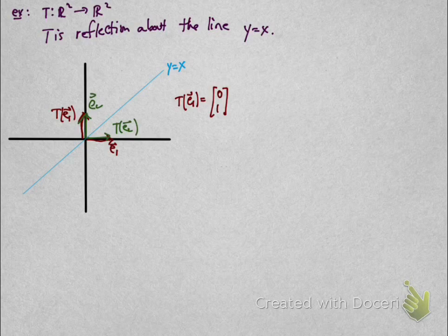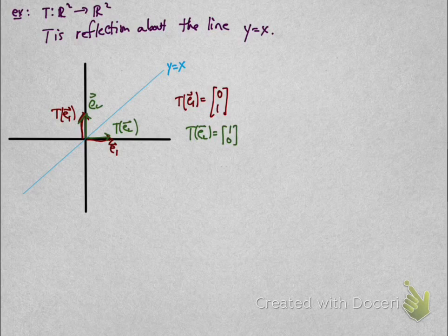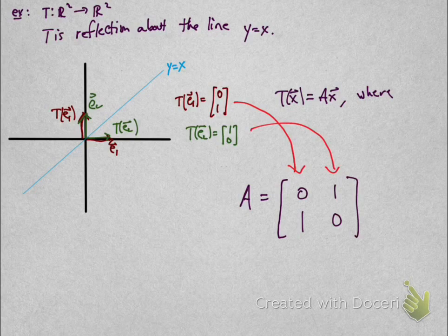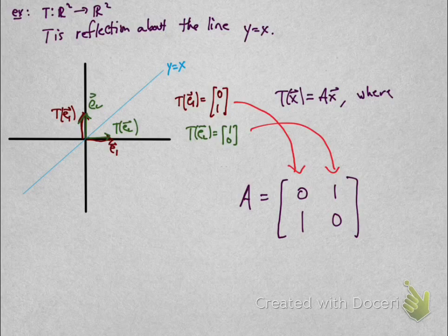E_2 is shown here in green, and T(E_2) is drawn there, so T(E_2) is (1,0). That tells us the standard matrix A is the matrix with entries 0,1,1,0. T(E_1) is column 1, and T(E_2) is column 2.